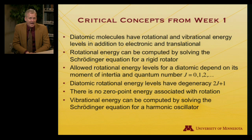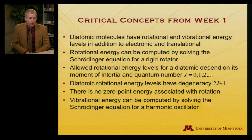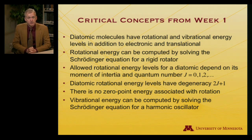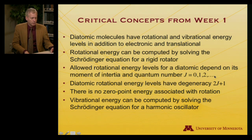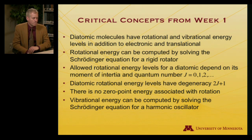Diatomic molecules add to translation and electronic energy two new kinds of energy, both kinetic: rotational and vibrational. The rotational energy is determined from solving the Schrödinger equation for a rigid rotator. The allowed rotational energy levels depend on the moment of inertia associated with the molecule and the quantum number j, where j ranges beginning at zero over integer values 0, 1, 2, and so on. The degeneracy of those levels is 2j plus 1, and rotation does not have zero point energy.